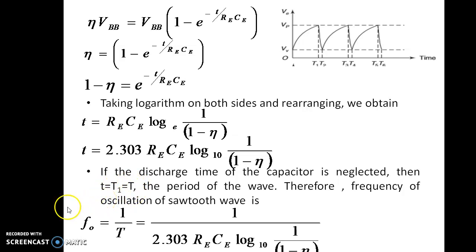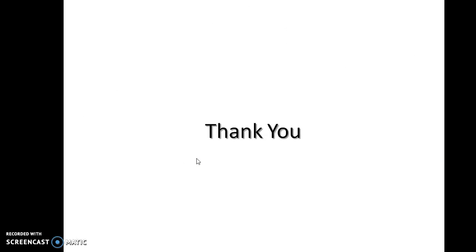Therefore, the frequency of oscillation of the sawtooth wave is F0 equal to 1 by T, equal to 1 by 2.303 REC log 10 into 1 by 1 minus eta. This expression is the frequency of the sawtooth generator, whereas T equal to 2.303 REC log 10 into 1 by 1 minus eta is the sweep time of the relaxation oscillator. Thank you for listening to this lecture.